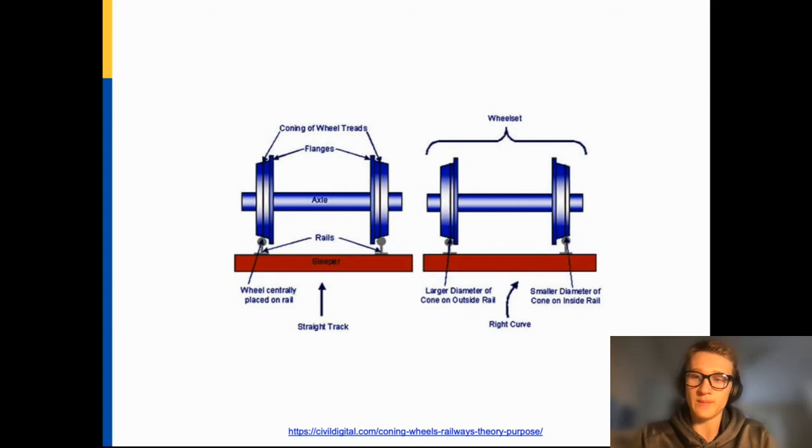Let's start by looking at a basic diagram of a train wheel set. One common misconception is that the train wheels are purely cylindrical, and the flanges, which are the notches on the inside of the wheels, are responsible for keeping the wheels on the track.